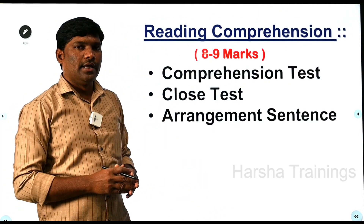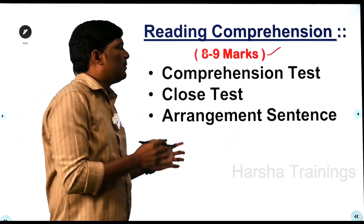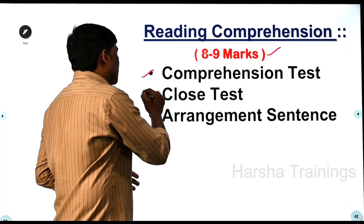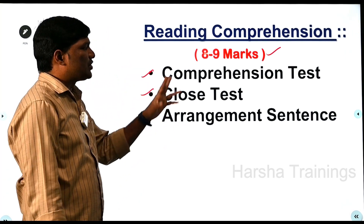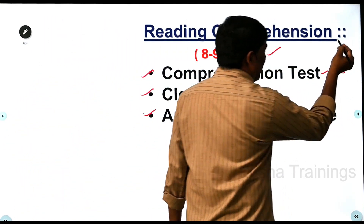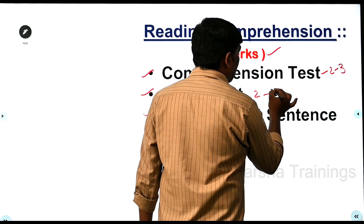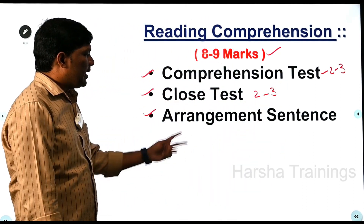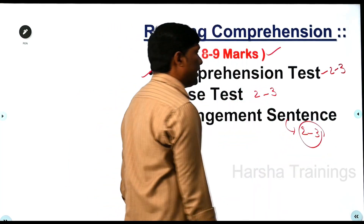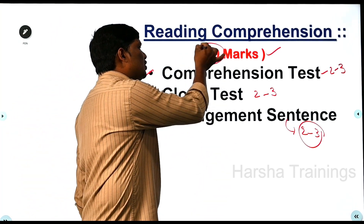The next part is reading comprehension. If you have prepared this concept properly, there are approximately 10 marks. Next is the cloze test — definitely 2-3 questions. Next is sentence arrangement. If you prepare these 3 concepts properly, you can answer approximately 10 questions correctly.